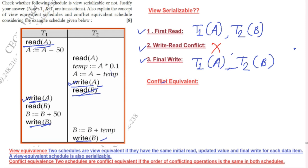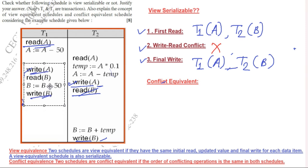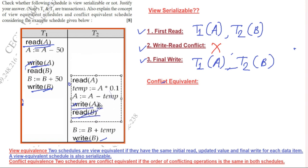Now we have to check if we can convert this concurrent schedule into a serial schedule. Serial means all instructions of T1 occur first, then all instructions of T2, or vice versa. Suppose we convert it so that T1 occurs first, then T2. We check if the view serializability conditions are preserved in this serial schedule.